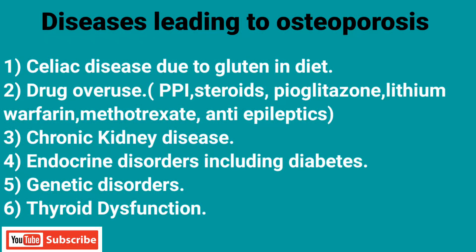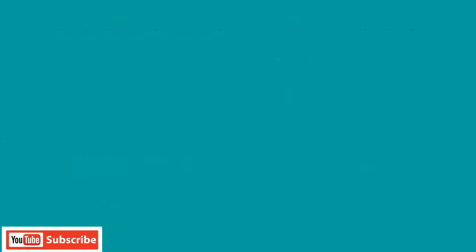Chronic kidney disease leads to osteoporosis due to increased parathyroid hormone levels. Endocrine disorders like Cushing's syndrome, diabetes, genetic disorders, and thyroid dysfunction can also lead to osteoporosis.